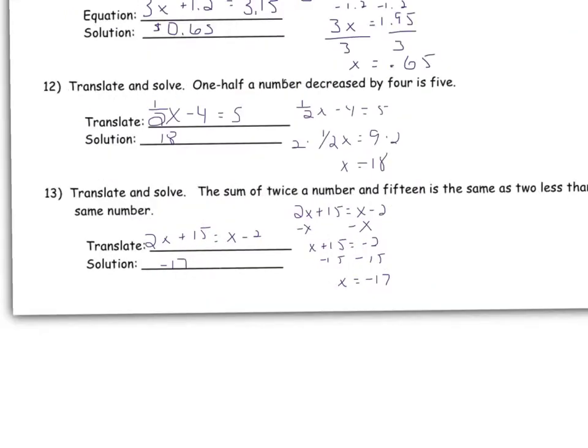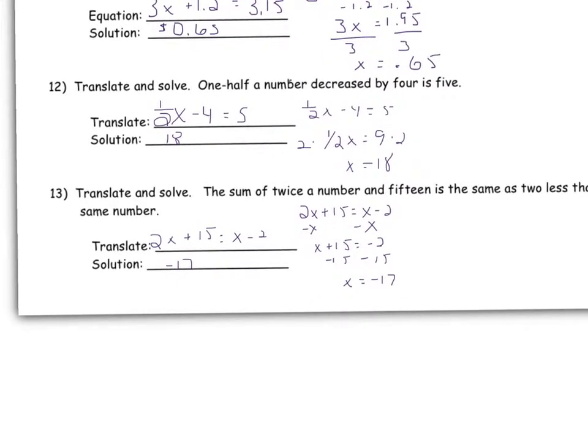All right, the translating and solving. Twice the amount, twice the number, and 15 is the same as 2 less than the number. So you're writing that equation just like it says and then you're solving to get the variable answer.